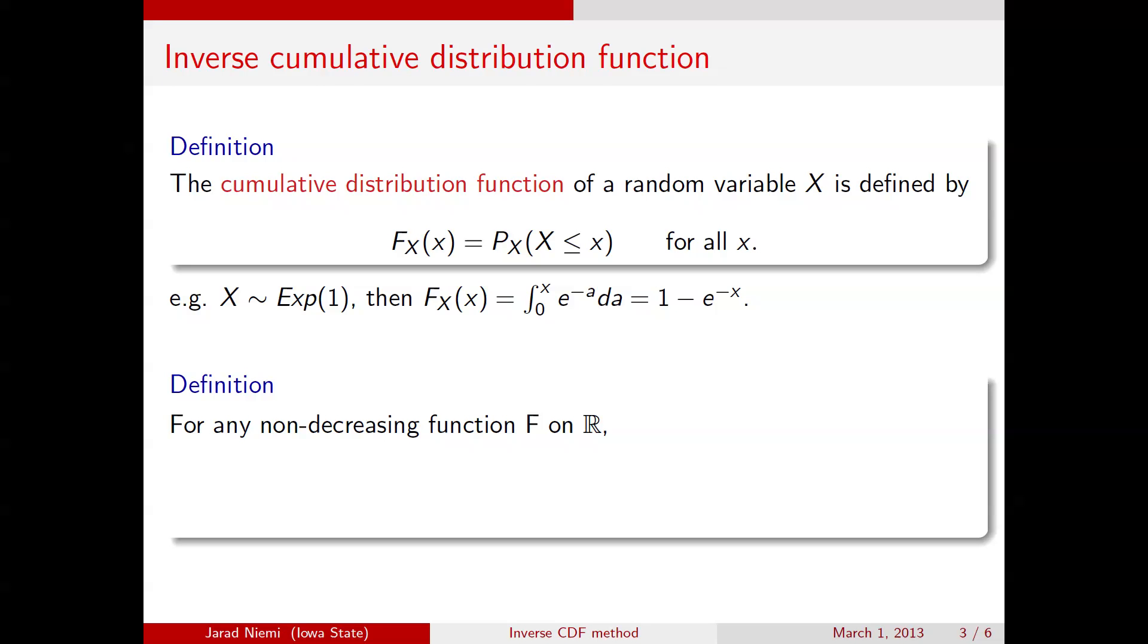Now, if we have a non-decreasing function f, which a cumulative distribution function is, then we have a generalized inverse of f, defined or denoted as F minus, is the infimum of x over f greater than or equal to u.